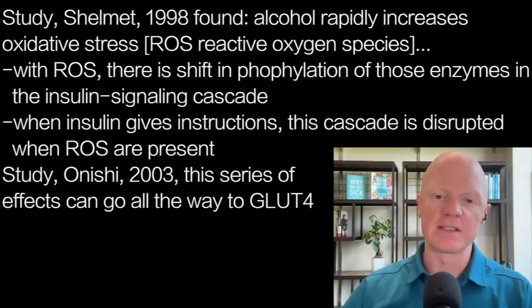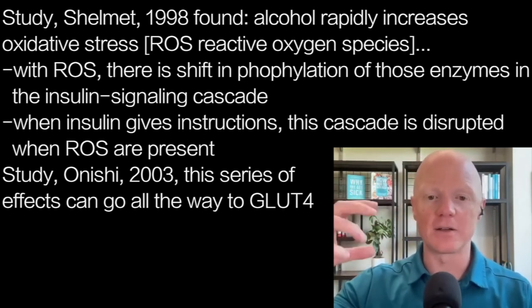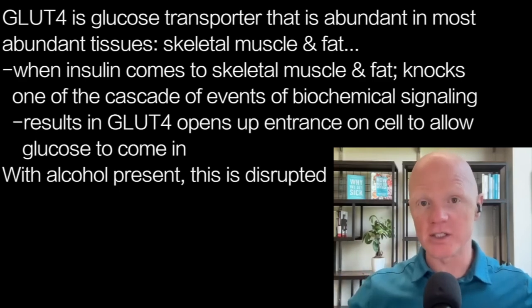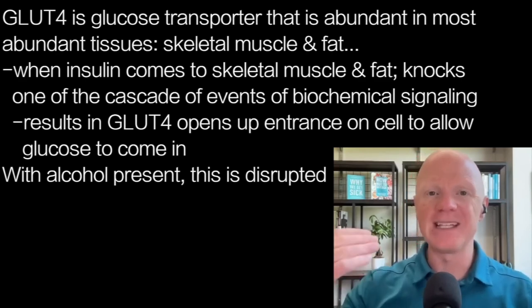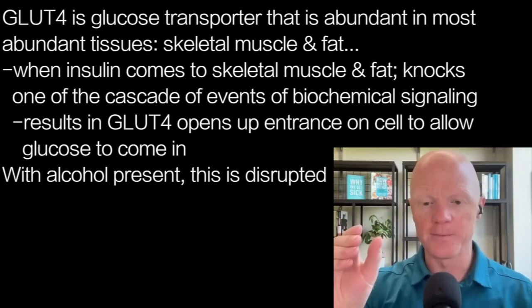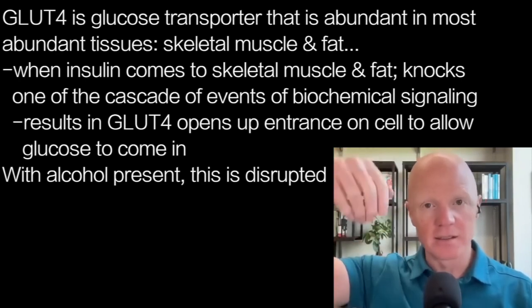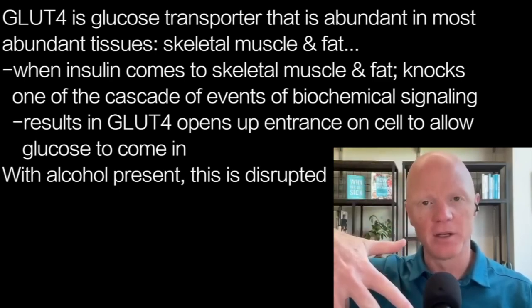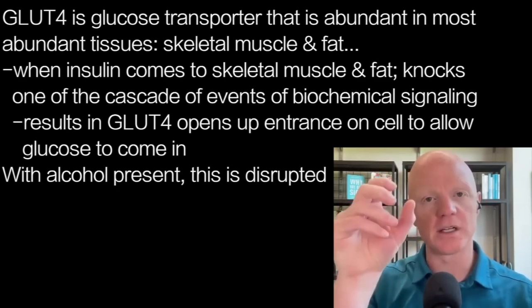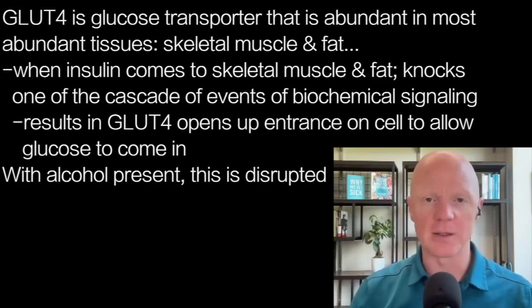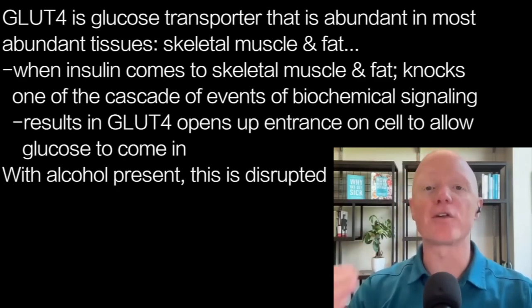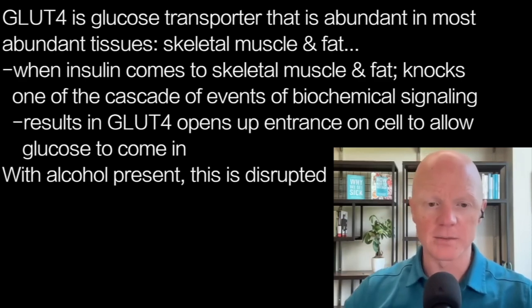Another paper, Onishi et al. 2003, finds that this series of effects can go all the way to affecting GLUT4, the glucose transporter that is abundant in the most abundant tissues — skeletal muscle and fat. When insulin comes to skeletal muscle and fat and activates the insulin receptor, one of the cascades of events results in GLUT4 coming from within the cell and opening up on the surface, allowing glucose to enter. Onishi et al. 2003 finds that ethanol incubation disrupts that process, which is further evidence of insulin resistance caused by ethanol.